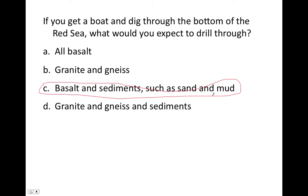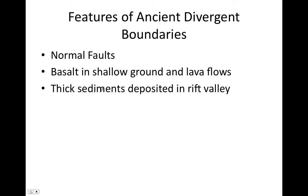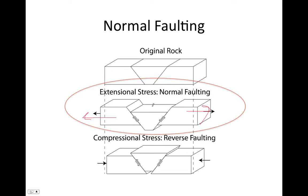In an ancient rift valley we would expect to find normal faults — those cracks that tilt down towards the center of the valley — basalt in the shallow ground and lava flows that flowed over the surface, and thick sediments deposited in the rift valley that form clastic sedimentary rocks. Normal faulting is the result of extensional stress. When you pull the lithosphere apart, it results in normal faulting, with cracks that tilt down towards the center of the valley. The subsidence of the rock in the center forms a depression — that's what creates the rift valley.